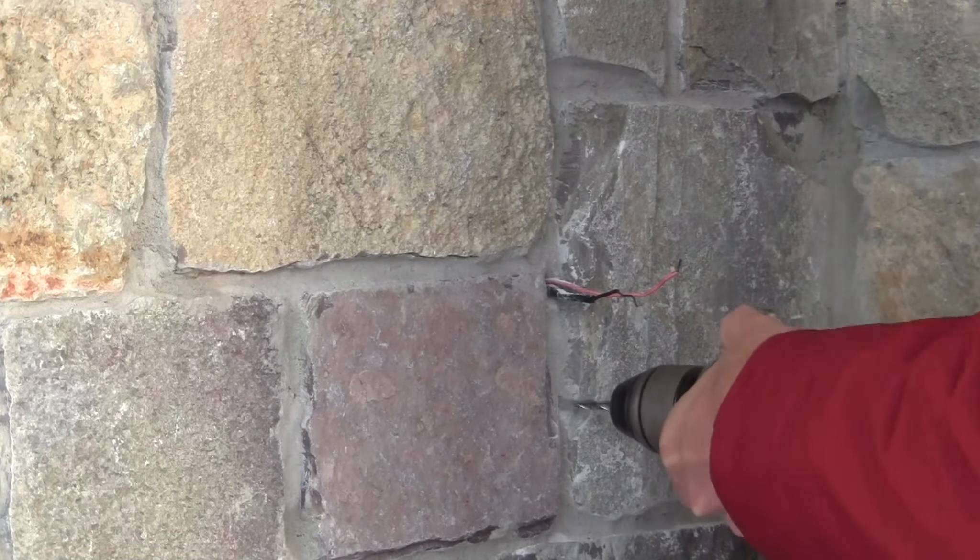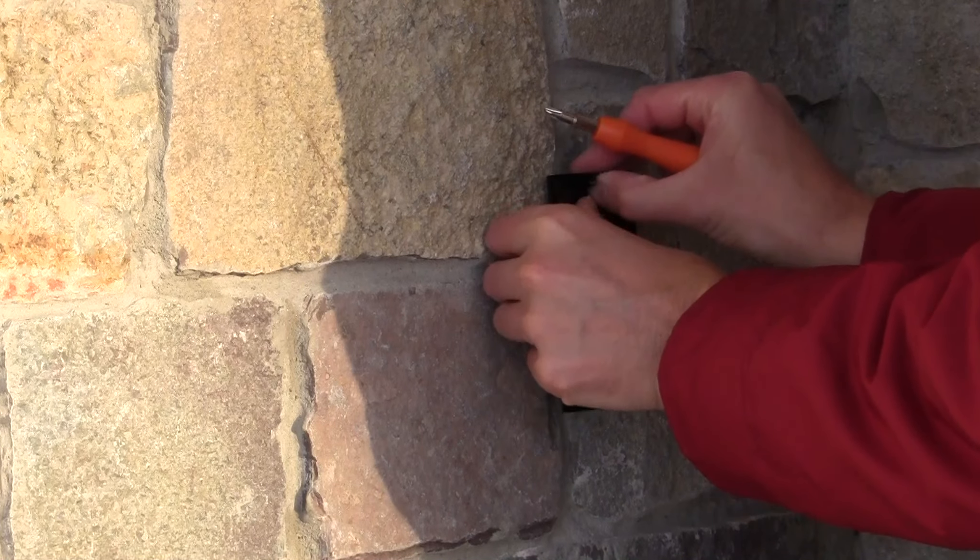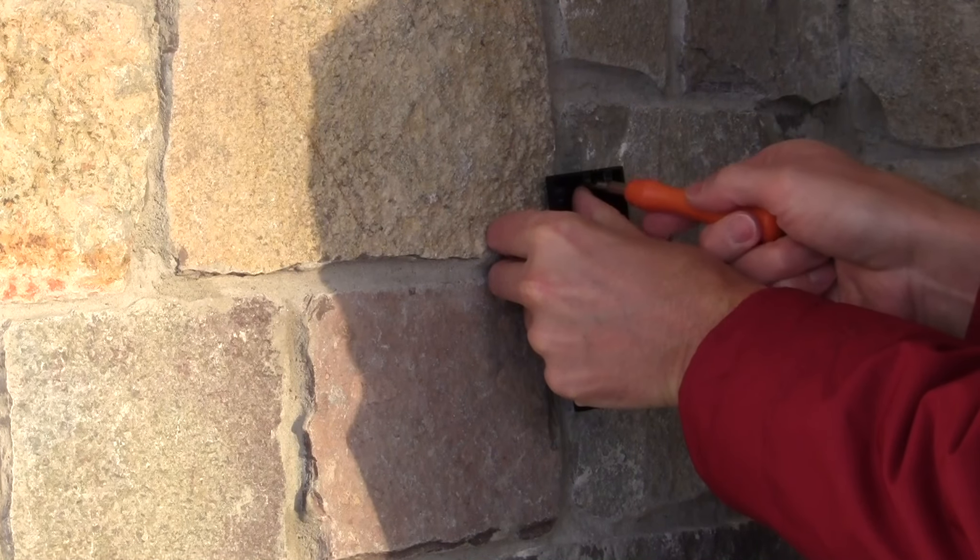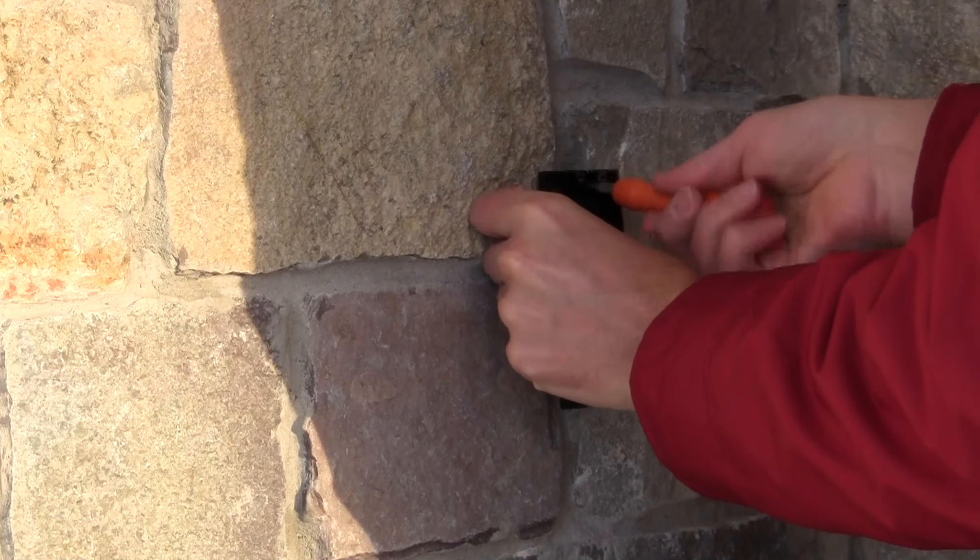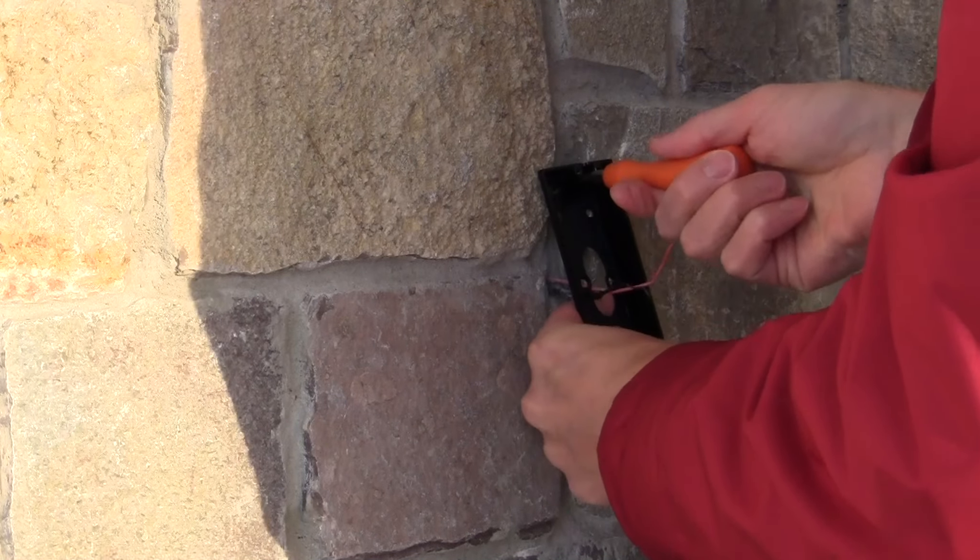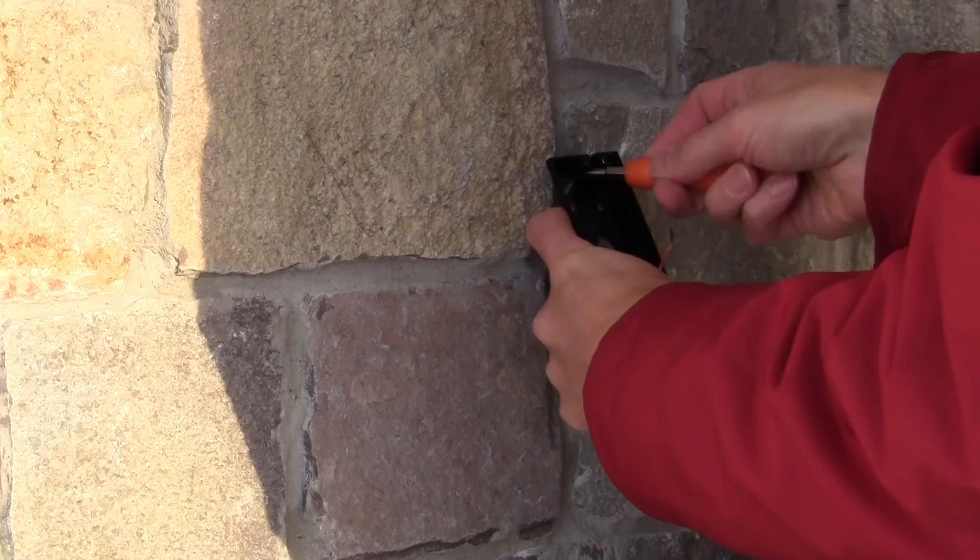And now I'm going to insert those anchors provided in the kit. And it's at this point I realized that the screws included in the kit are too short because my grout on my natural stone is about a half inch deep. So it's time to make a run to the hardware store.